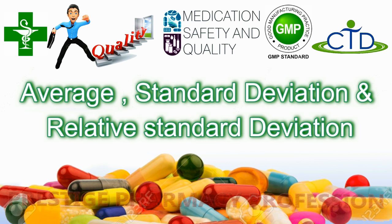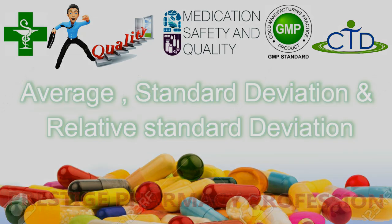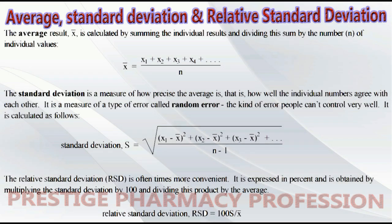Average, standard deviation, and relative standard deviation are statistical terms used to calculate the closeness in the data. These terms are used to measure the characteristics of validation such as accuracy and precision. The formulas required to calculate average, standard deviation, and relative standard deviation are shown on screen. A basic understanding of these terms is essential to understand the validation process of an analytical method.